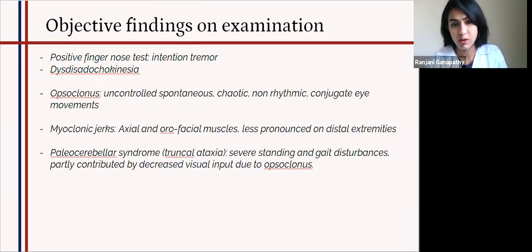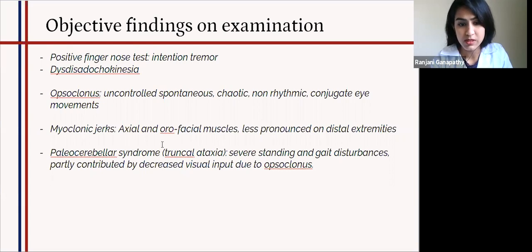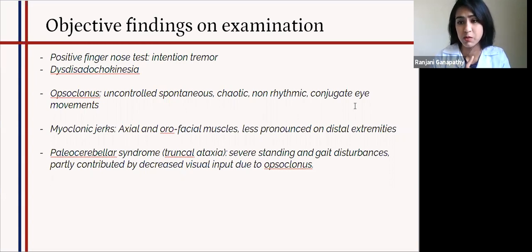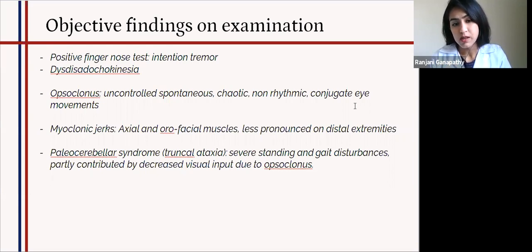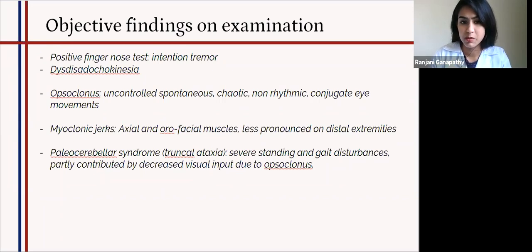On the video we saw, there were some objective findings like the positive finger-nose test, intention tremor, and dysdiadochokinesia. Also, in the patient that I saw, there was some mild cerebellar dysarthria — his phonation was shaking and he had scanning speech and opsoclonus. This is the reason it was very unpleasant for him to keep his eyes open, because opsoclonus is uncontrolled, spontaneous, chaotic, non-rhythmic eye movements in all planes and directions, which made it really difficult to read and also affected his stability. We also saw some myoclonic jerks in the axial and orofacial muscles, less so in the distal extremities. This was more of a paleocerebellar syndrome with truncal ataxia, and he found it really hard to stand — gait disturbances arising not only from the truncal ataxia but also from decreased visual input due to the opsoclonus.